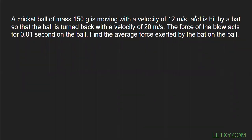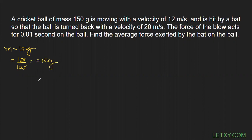Let's discuss what this question is and what we need to do. A cricket ball of mass 150 grams — first let's write down m = 150 grams. Grams is not the SI unit, so we need to convert it to kg by dividing by 1000, giving us 0.15 kg. They say it is moving with a velocity of 12 meters per second, so the initial velocity u = 12 m/s.